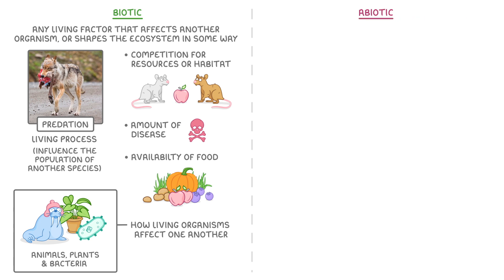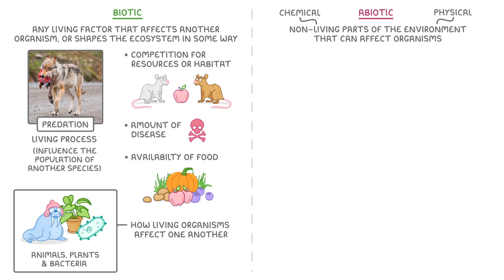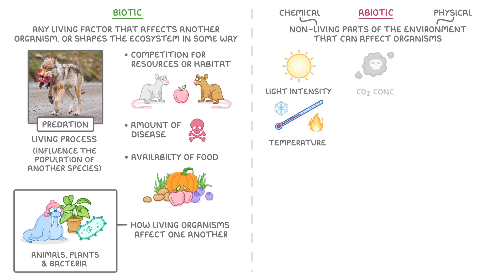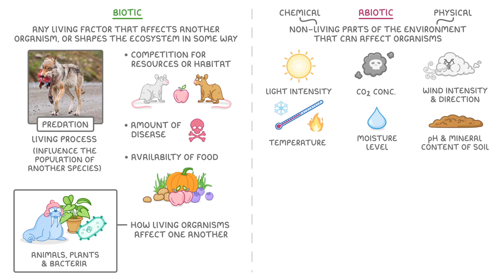Abiotic factors, meanwhile, are all of the non-living parts of the environment that can affect organisms. So these are often the chemical or physical parts of the environment. It includes things like light intensity, temperature, carbon dioxide concentrations, moisture levels, the intensity and direction of the wind, and the pH and mineral content of the soil.